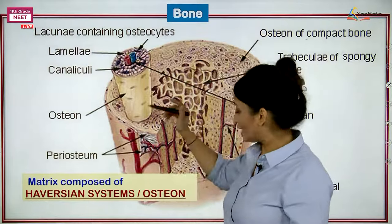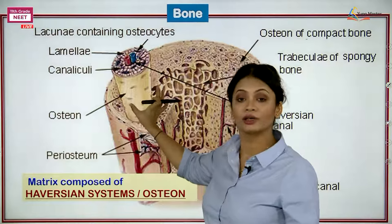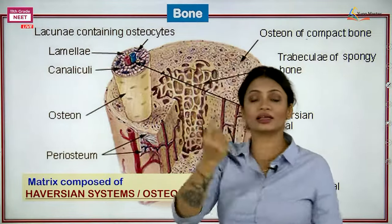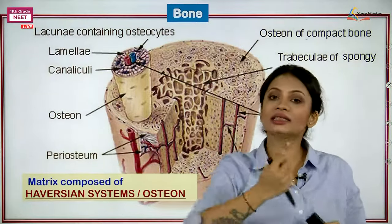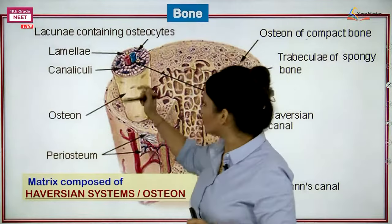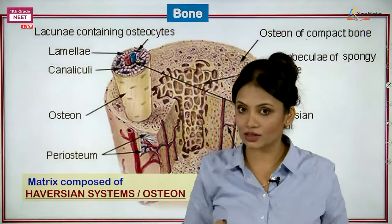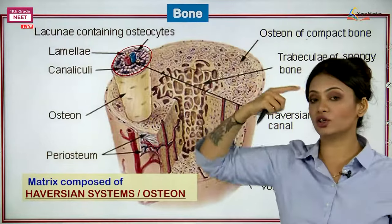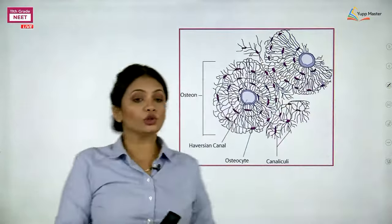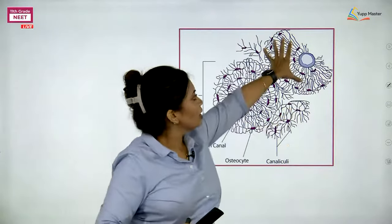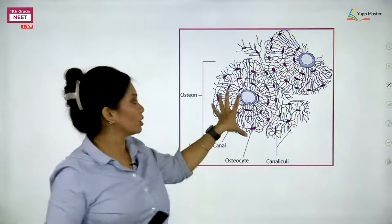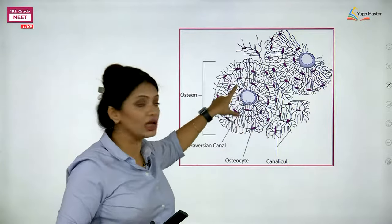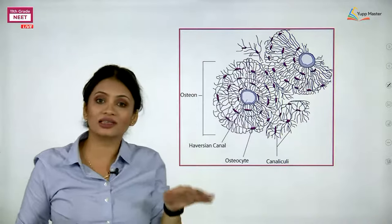Inside the Haversian system, in the center, there is a canal called the Haversian canal. This canal contains blood vessels — an artery and a vein — and nerves, which are visible as red, blue, and yellow structures respectively. The rest of the space outside the canal is the matrix region.